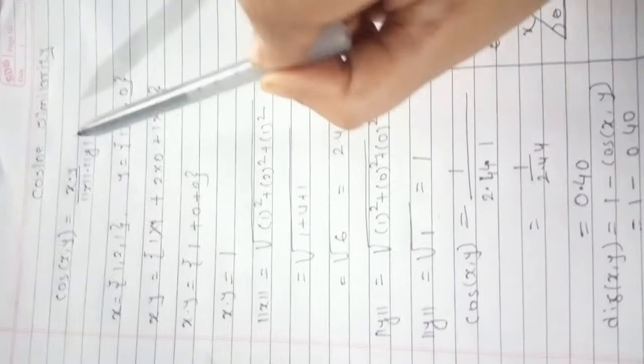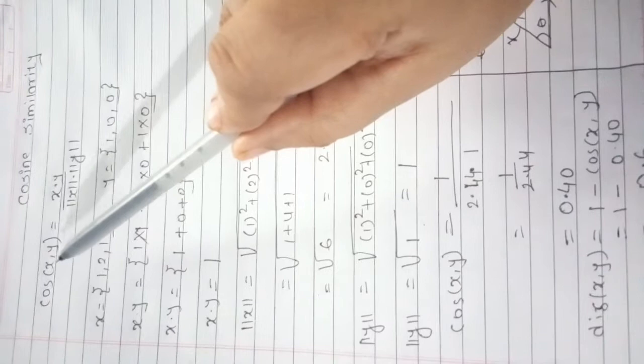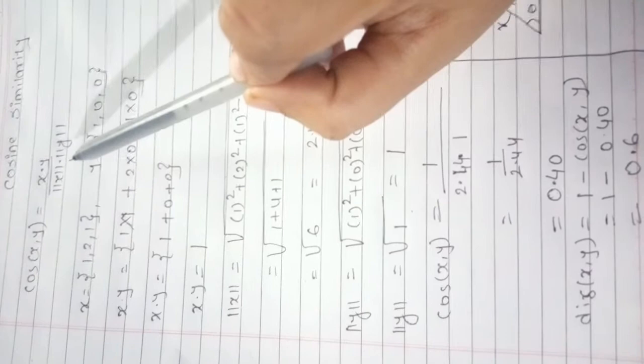How to find out this similarity? For this, we are using this formula: cos(x, y) is equal to x dot y divided by mod x into mod y.